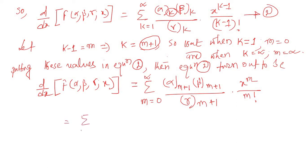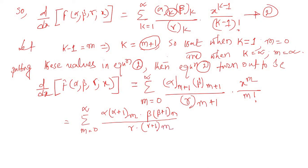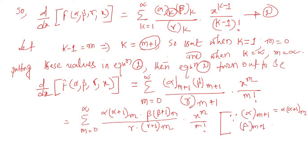This equals summation m equal to 0 to infinity of α(α+1)_m times β(β+1)_m over γ(γ+1)_m times x to the power m over m factorial, since (α)_{m+1} equals α(α+1)_m, (β)_{m+1} equals β(β+1)_m, and (γ)_{m+1} equals γ(γ+1)_m.